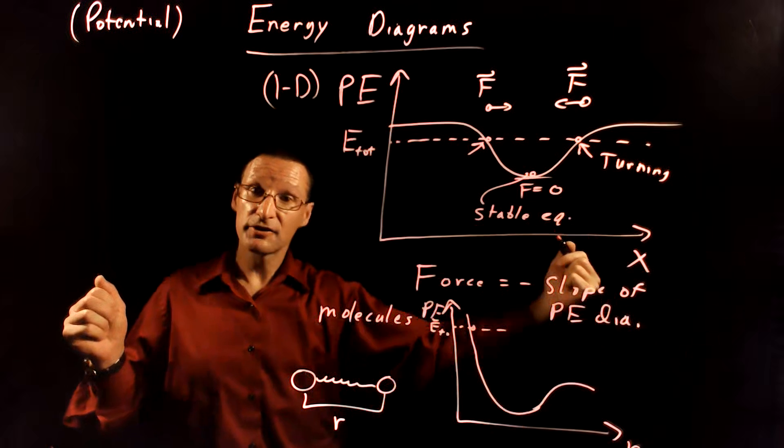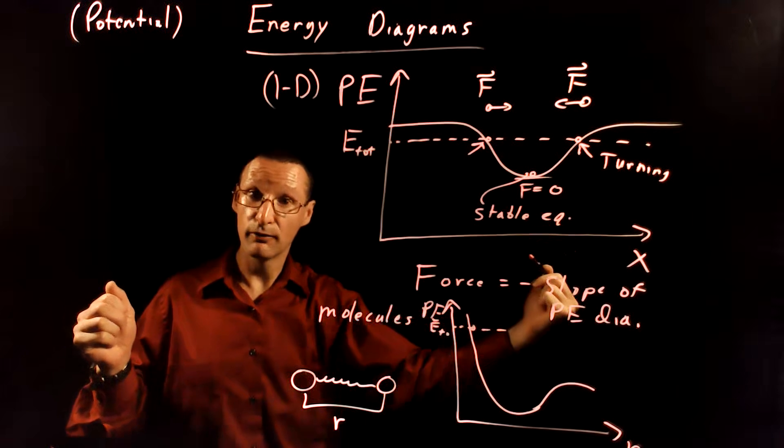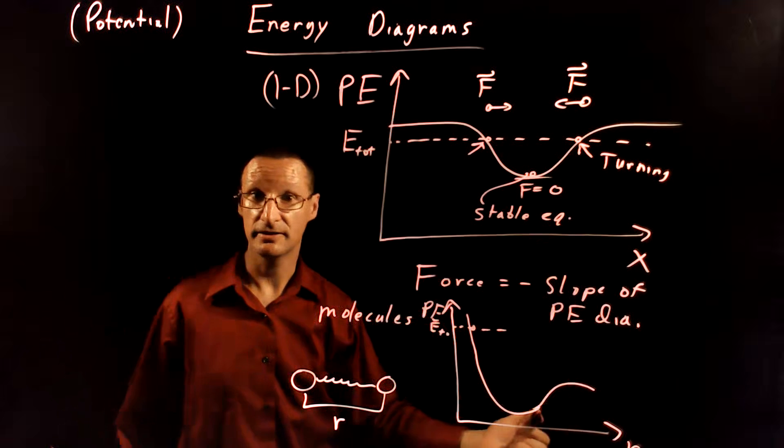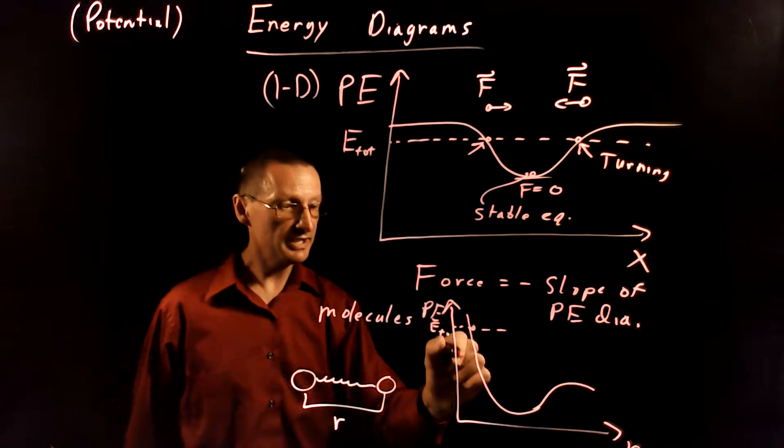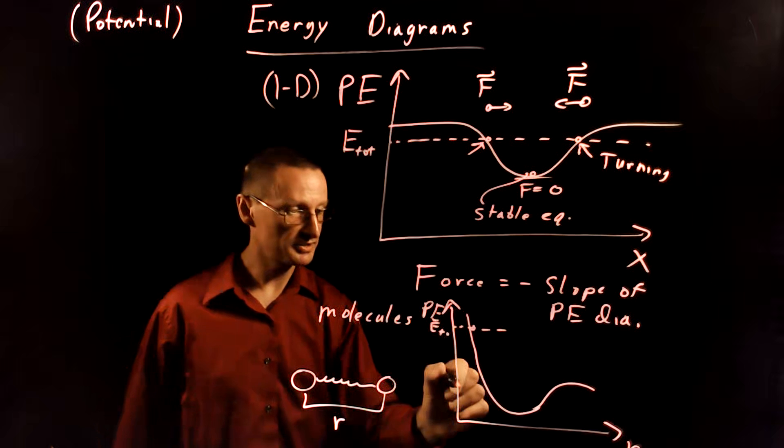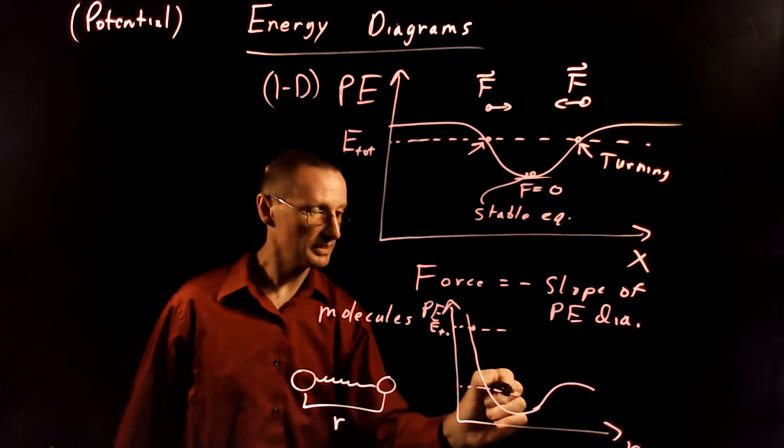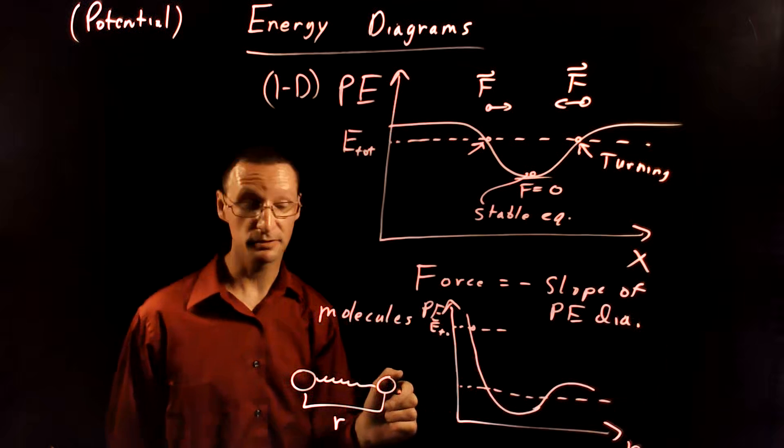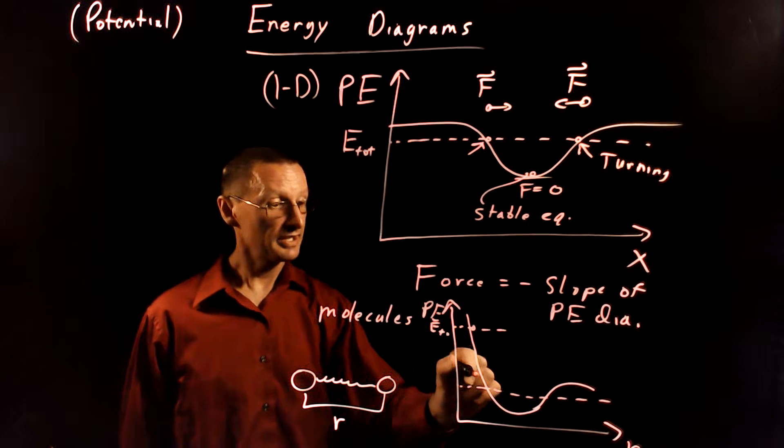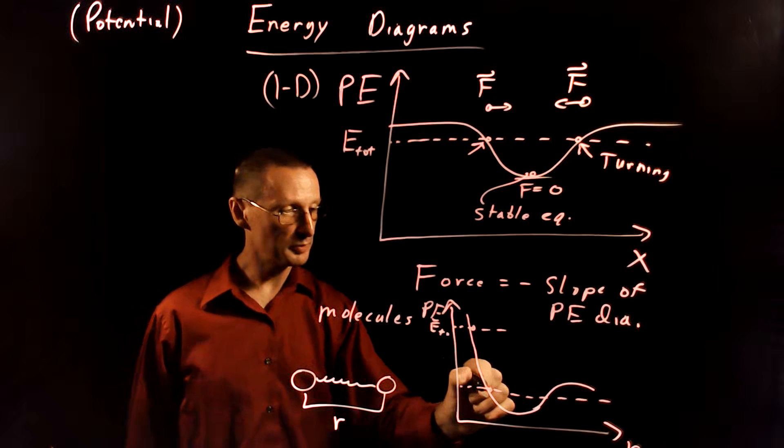when they're infinitely far apart, they'll still have some kinetic energy left over. And so they won't be bound to each other. So your molecule is just going to fall apart. What you need to have a stable molecule is the total energy needs to be less than the potential energy at large separations.